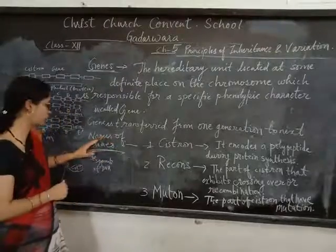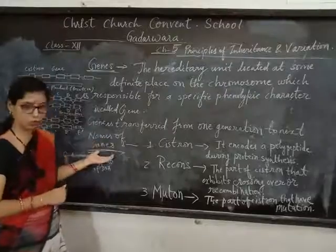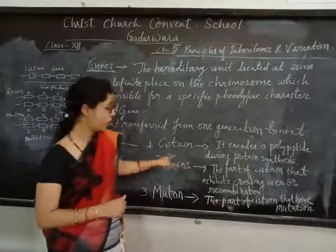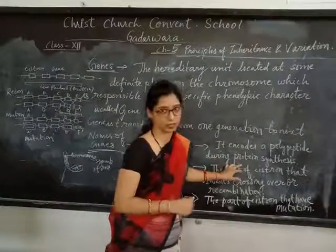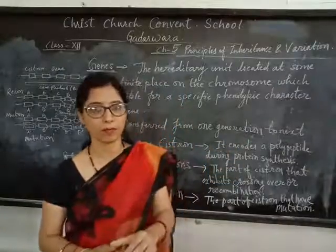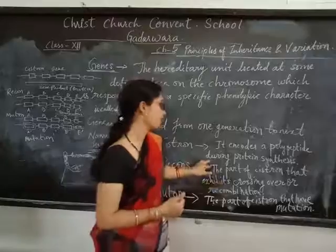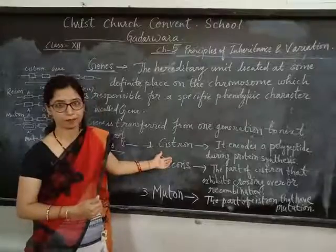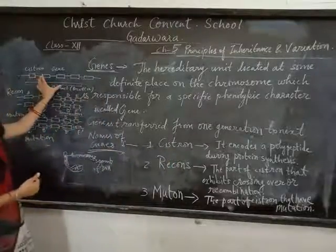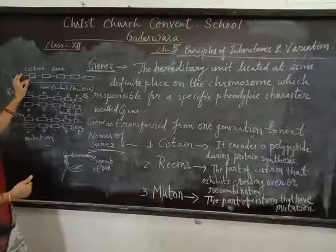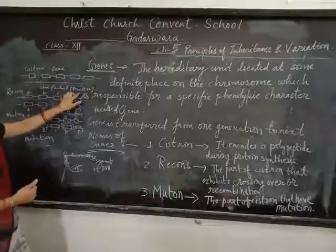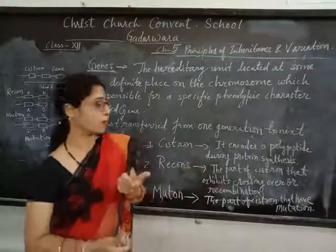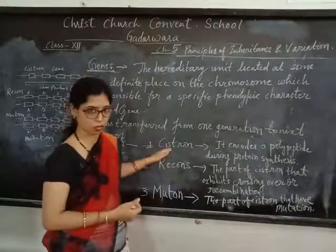Now, according to their function, different names are given to genes. First is cistron. What is cistron? It encodes the polypeptide giving protein synthesis. That part of DNA, that segment which encodes for protein synthesis by making a polypeptide chain - that is called cistron. This is the structure of gene and this is the cistron. It makes a protein, which is a polypeptide chain of amino acids. So protein formation happens through cistron.